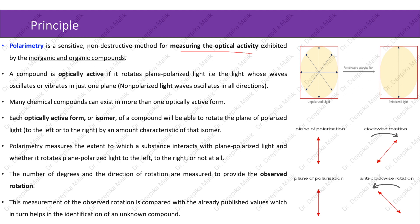A compound is optically active if it rotates plane polarized light — that is, light whose wavelength oscillates or vibrates in just one plane. Non-polarized light waves oscillate in all directions. Many chemical compounds can exist in more than one optically active form, and each isomer will rotate the plane of polarized light to the left or to the right by an amount characteristic of that isomer.